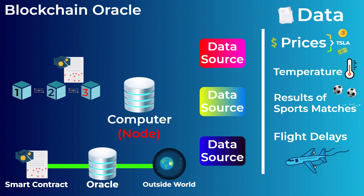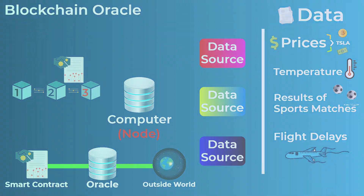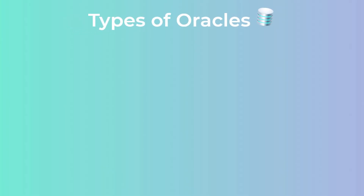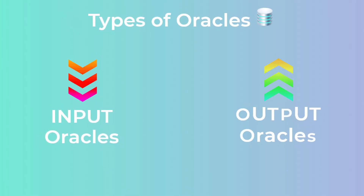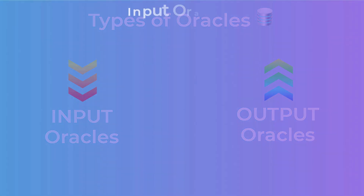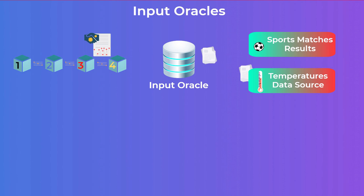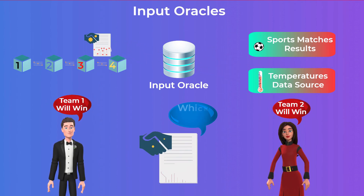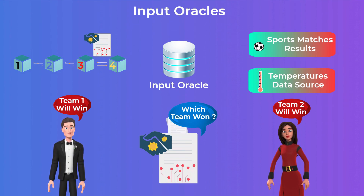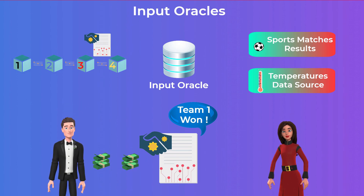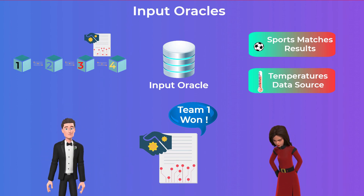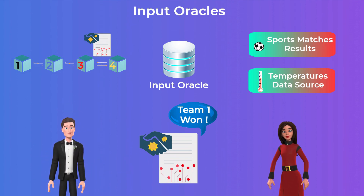Oracles can be categorized into many types, but mainly there are two: input oracles and output oracles. Input oracles get data from the real world and send it to a smart contract on a blockchain. In the betting example, we need an input oracle to get the match result from a trusted source and send it to our smart contract, which can then pay the winner according to the result received.